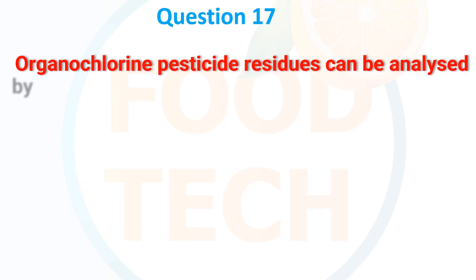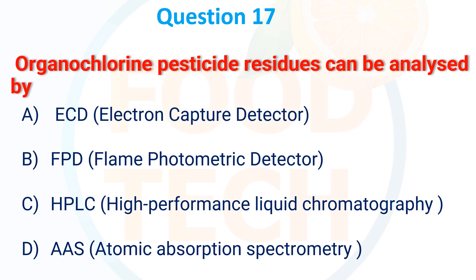For detection of pesticide residues, which detector is used? A. ECD - Electron Capture Detector, B. FPD - Flame Photometric Detector, C. HPLC - High Performance Liquid Chromatography, D. AAS - Atomic Absorption Spectroscopy. The correct answer is Electron Capture Detector.